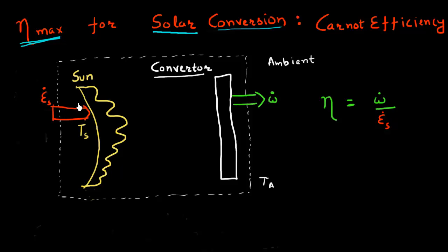What is the maximum efficiency by which you can convert this energy from the sun into useful work? Can it be 100%? The answer is no, and the reason is the second law of thermodynamics. So far I've considered only energy, but with this energy is associated an entropy flux.